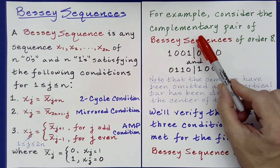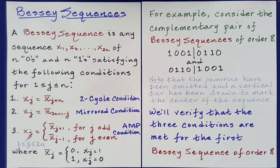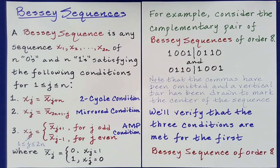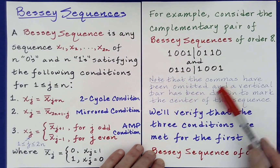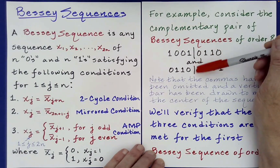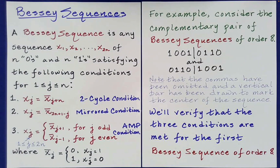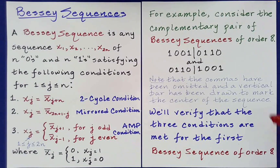Consider the complementary pair of Bessie sequences of order 8. If there is a Bessie sequence of a certain length, its complement — which simply refers to switching zeros for ones and ones for zeros — will also be a Bessie sequence satisfying all three conditions. When we write sequences, we omit the commas, and a vertical bar is drawn to mark the center of the sequence. We'll now verify that the three conditions are met for the first Bessie sequence of order 8.